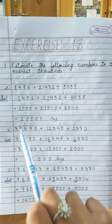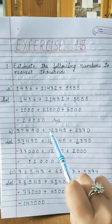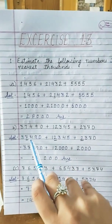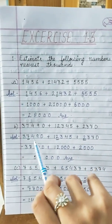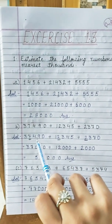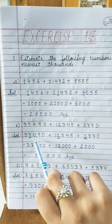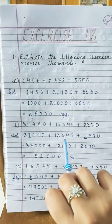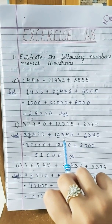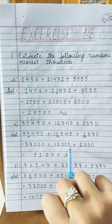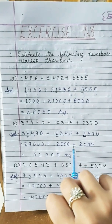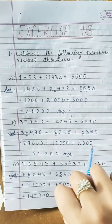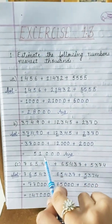Part B is 37490 plus 12345 plus 2370. Underline the digits at thousands place. For 37490, observe the digit after 7 — it is 4, less than 5 — so 7 remains as it is and 490 is replaced by 0. For 12345, observe 3 — less than 5 — so 2 remains and the rest become 0. For 2370, observe 3 — less than 5 — so 2 remains and 370 is replaced by 0. Adding all these gives 51,000.